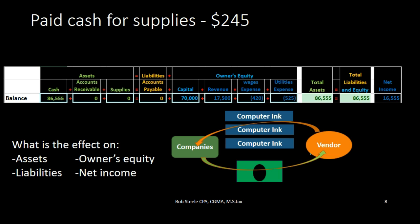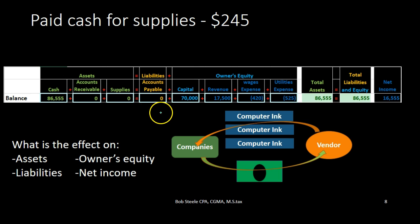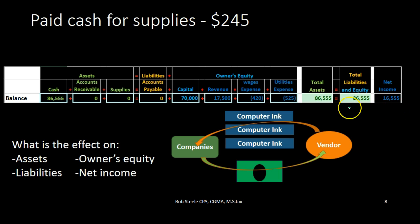We're going to record this in terms of the accounting equation — assets equal liabilities plus owner's equity. We are currently in balance before the transaction with total assets of 86,555, all of which is in cash. That equals liabilities of zero plus total equity, which includes 70,000 capital, 17,500 revenue, minus expenses of 420 for wages and 525 for utilities, giving us a net income of 16,555.